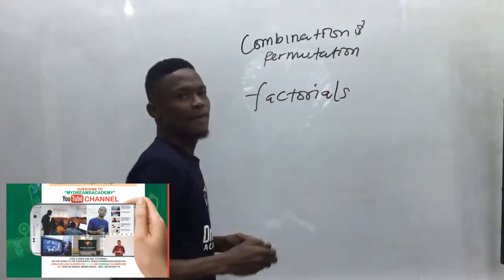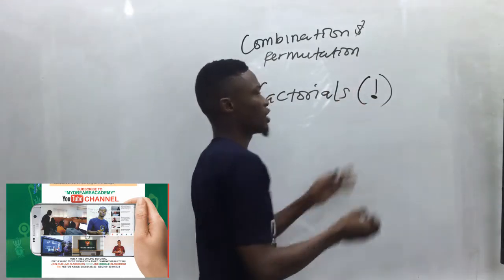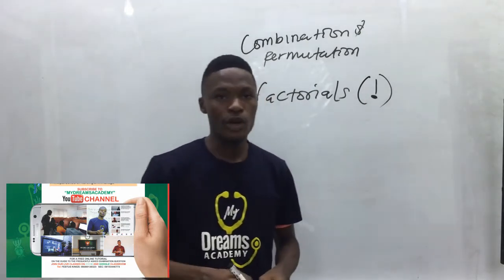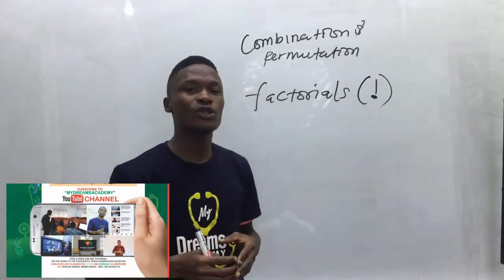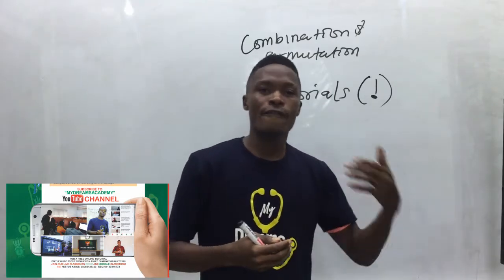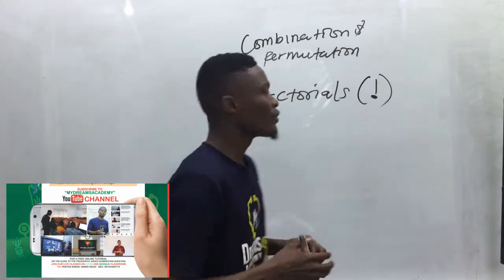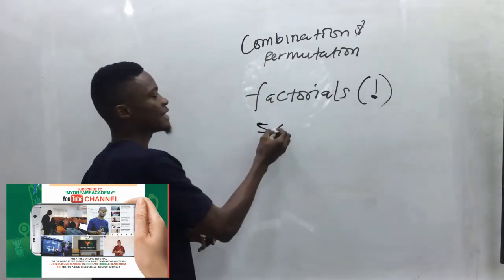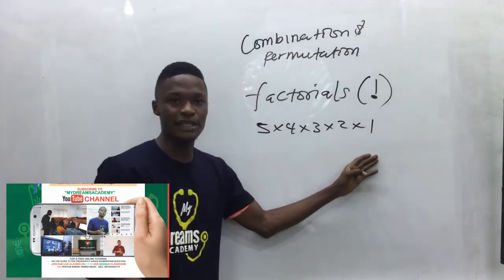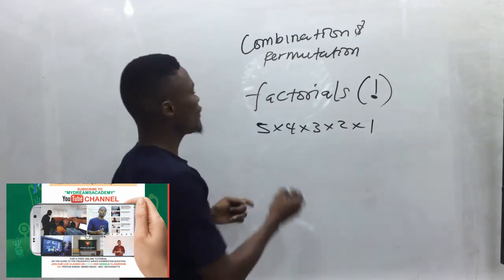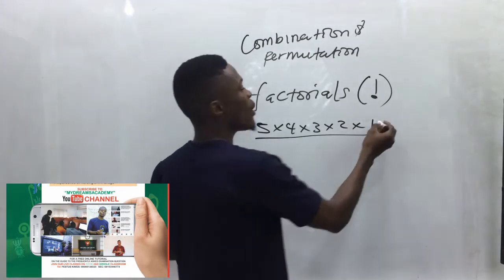In factorials, we use the exclamation symbol. Factorials are a mathematical way of representing the product of consecutive numbers in descending order. For example, if I have five times four times three times two times one, all these numbers are consecutive but in descending order. If I don't want to write all these down, there is a shorter way.